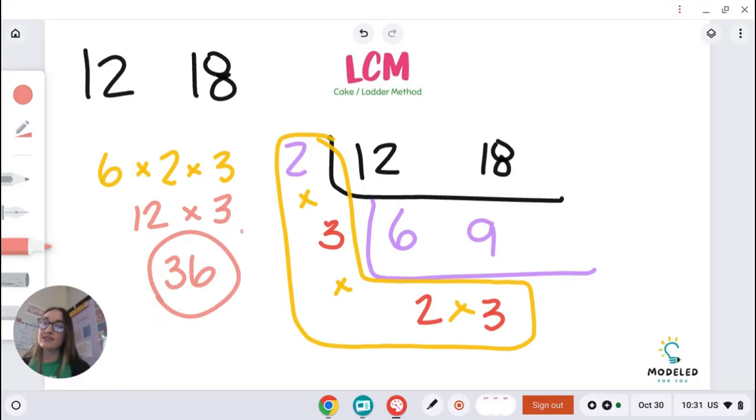My LCM of 12 and 18, or my least common multiple that these two would have in common, would be 36. I hope this helps as you work on your LCM journey. Thanks so much.